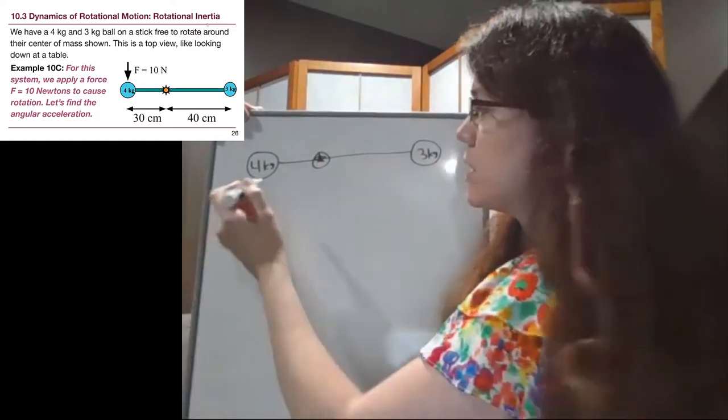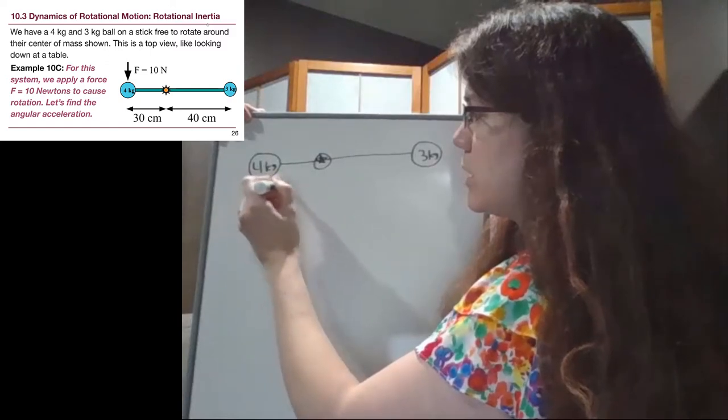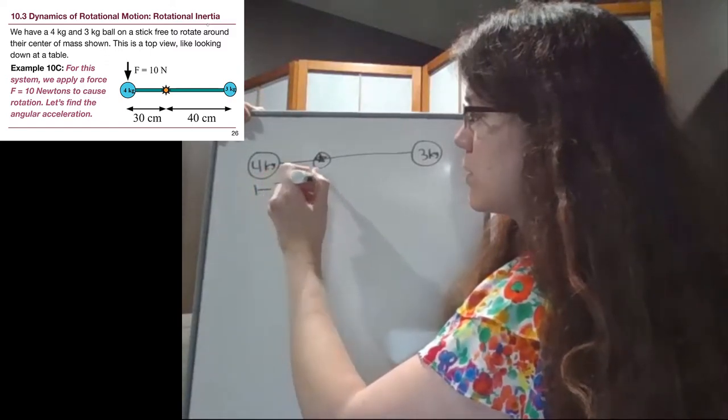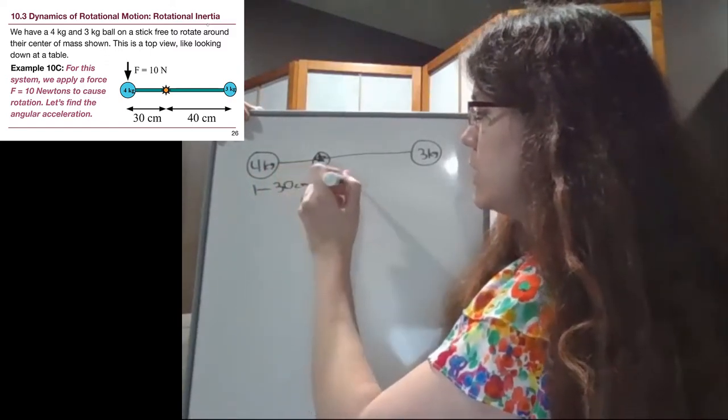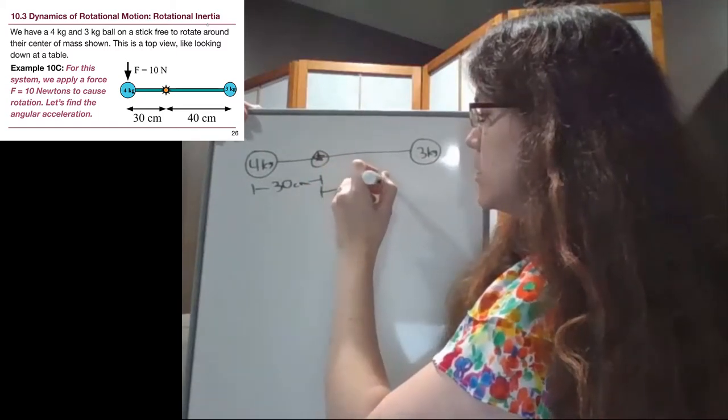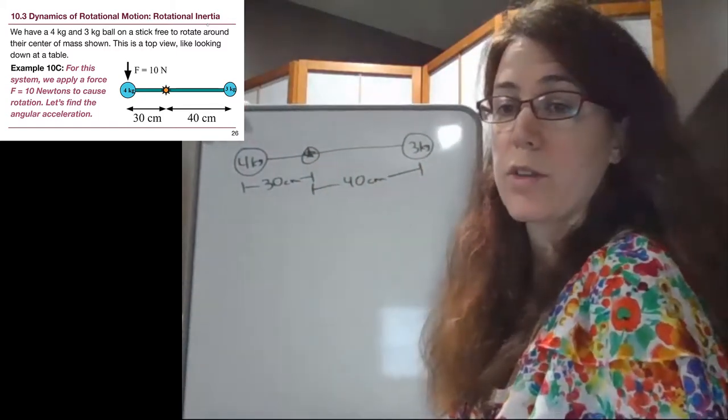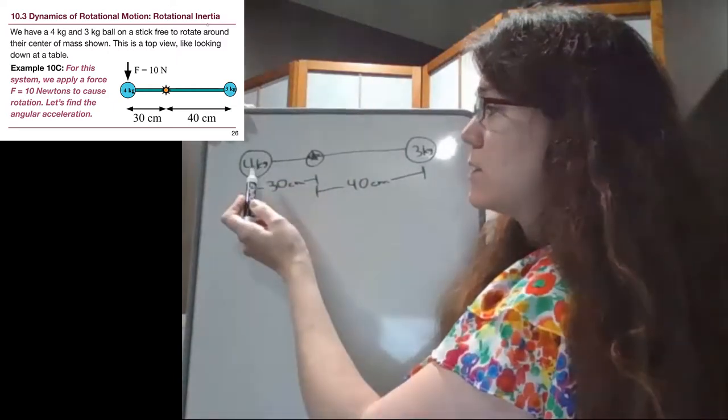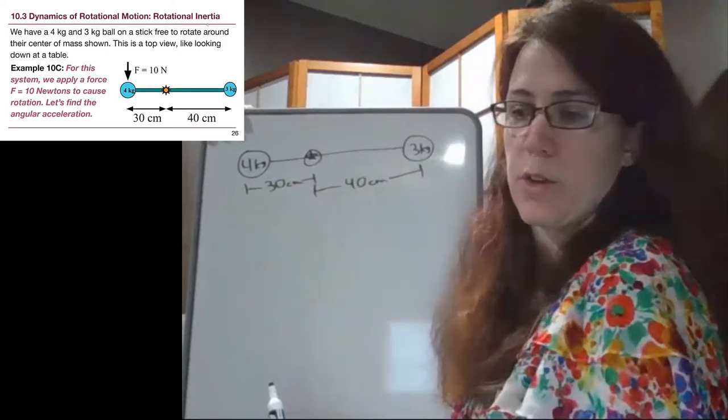So we have these distances, 30 centimeters and 40 centimeters, that are the distances between the axis and one mass, and the axis and the other mass.